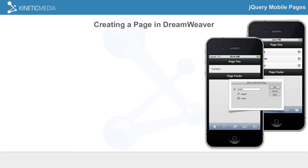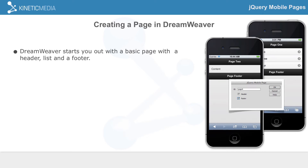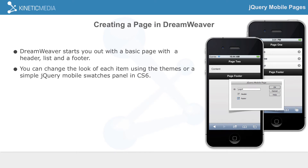When you add a page inside of Dreamweaver for jQuery Mobile, it allows you to give a page an ID, because every single page needs its own ID — that's how you link to it. You then define whether you want a header or a footer; those are optional. The content section is not optional. Dreamweaver starts you out with a basic page that includes a header on every page, and on the first page you have a list as part of the content, plus a footer. You can change the look of each item.